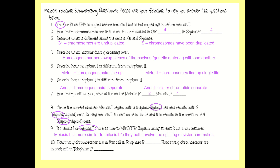Question 10: how many chromosomes are in this cell in prophase 1? You should have said four chromosomes. How many are in each cell in telophase 2 at the very end? You should have said two. So we went from a diploid cell to a haploid cell.